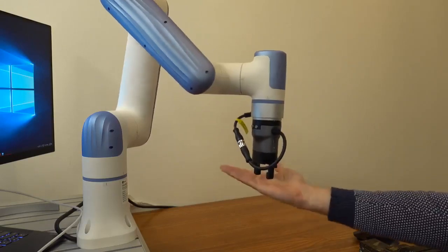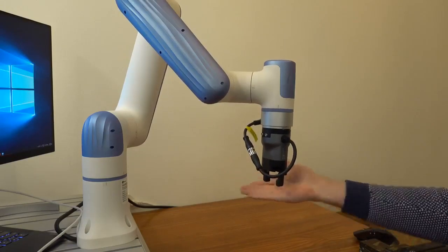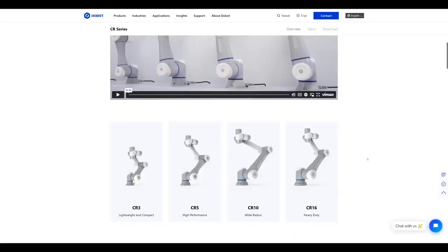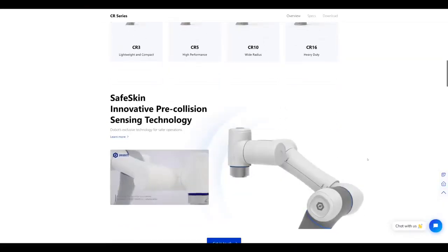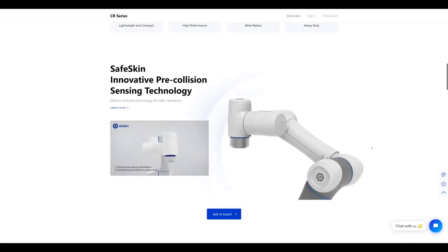If your application requires more advanced safety options, Dubot also offers the CR series of cobots with pre-collision detection. In that case, the arm stops even before you make contact with it. So please consider what type of robot is required for what you are trying to do with it.